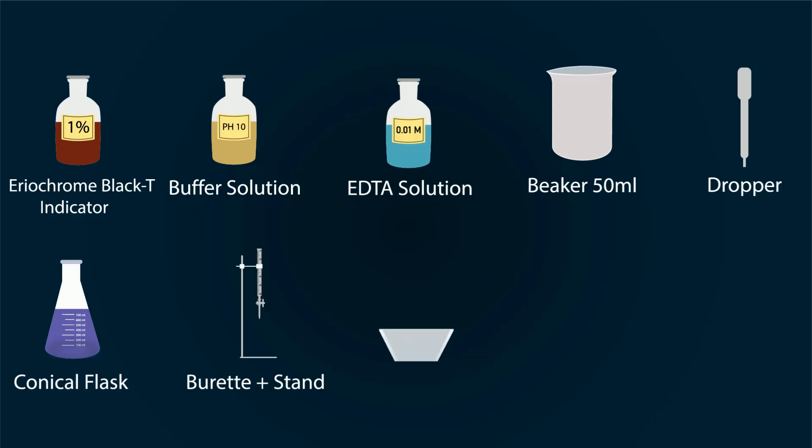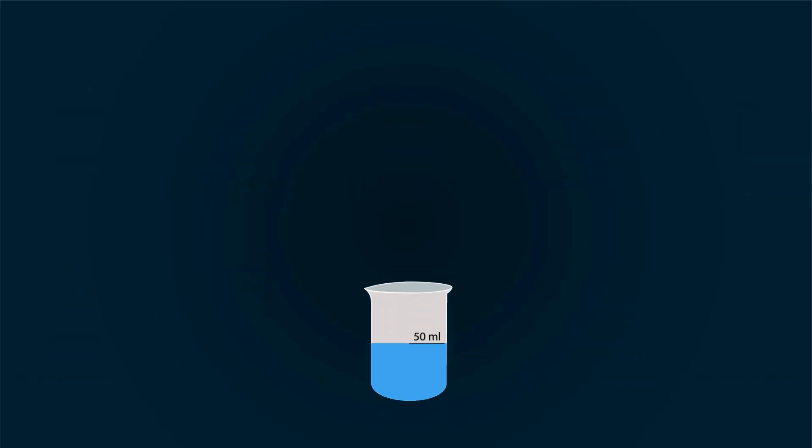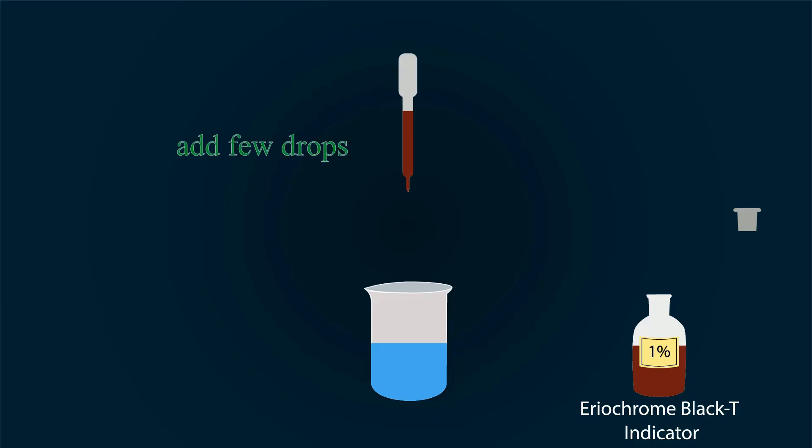First of all, take a 50 milliliter water sample in a beaker. Now take one percent solution of Eriochrome Black T indicator and add a few drops into the water sample with the help of a dropper. You will see as you add the solution, the color of water will change to reddish.